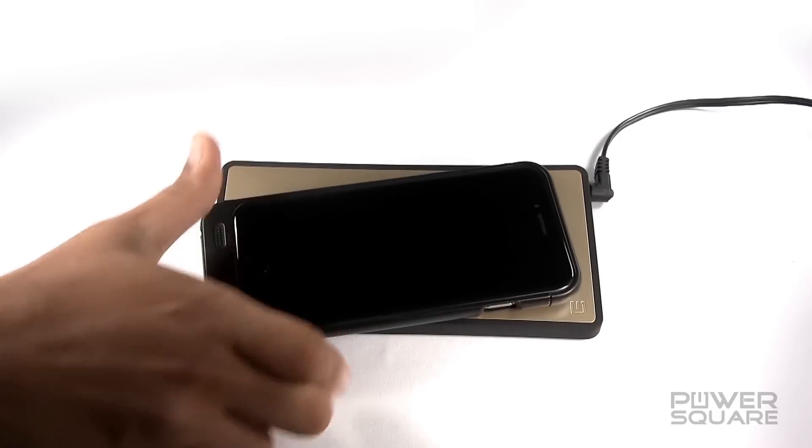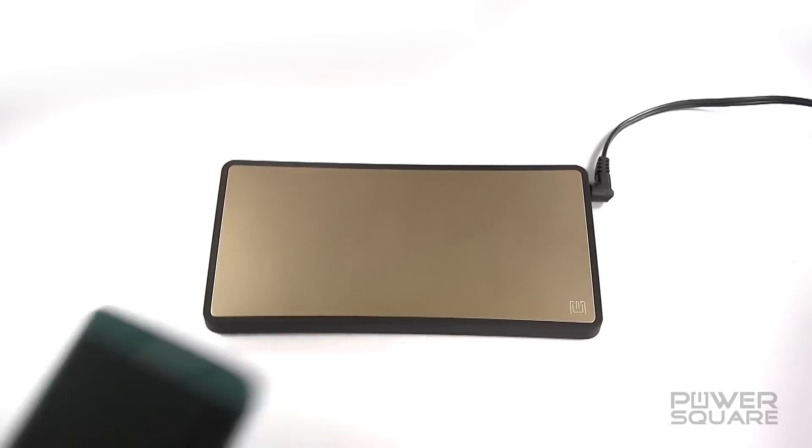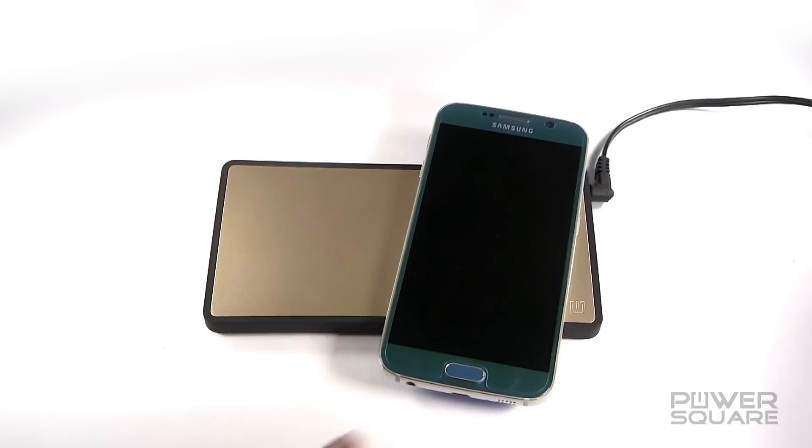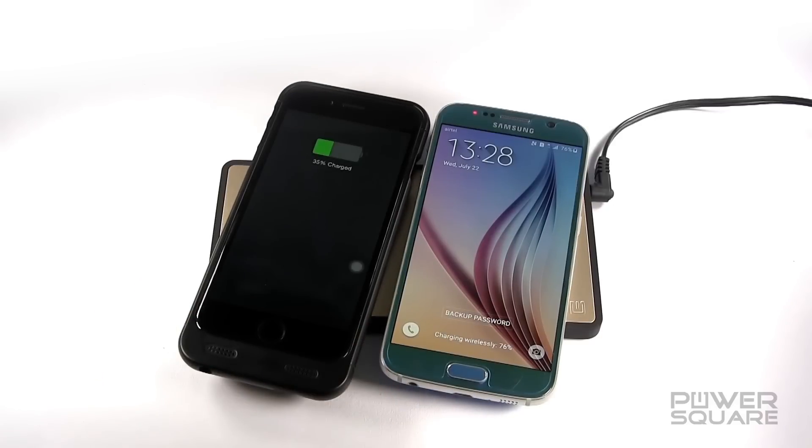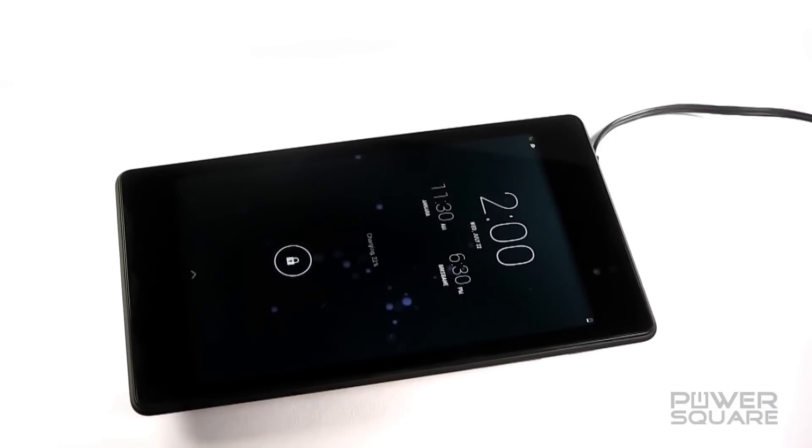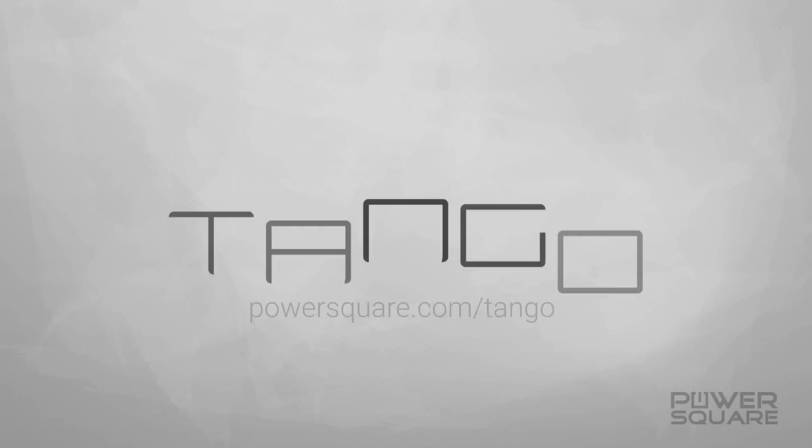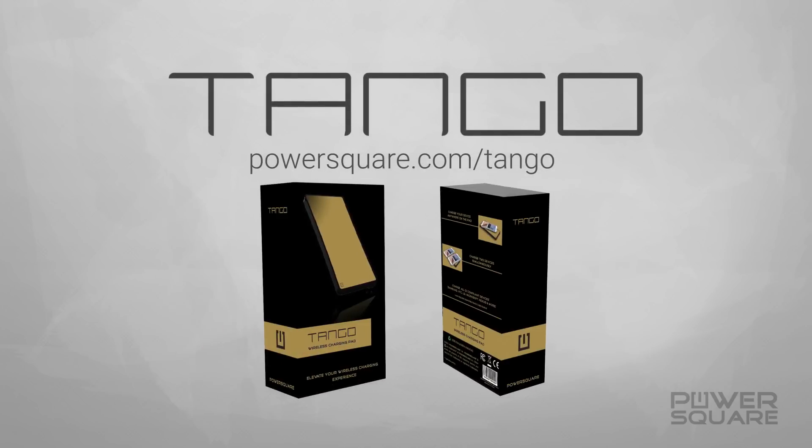Simply place your mobile phone anywhere on the pad. It doesn't even have to be aligned perfectly. You can choose to add another phone and charge them both at the same time, or just replace them with a tablet. It's as easy as that. Elevate your wireless charging experience with Tango today.